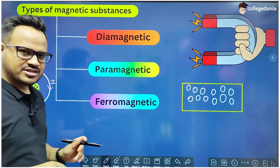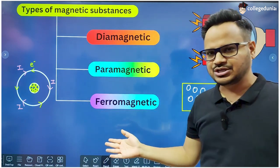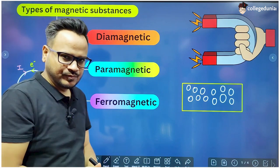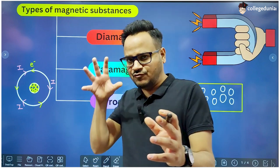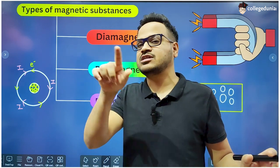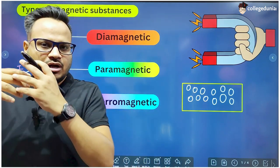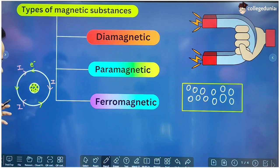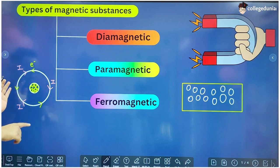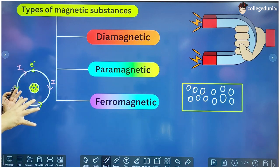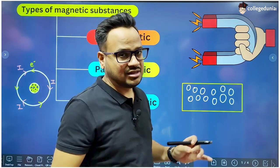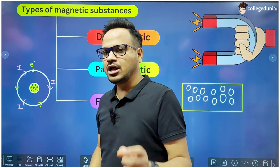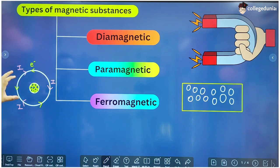This current is in clockwise sense. If we see this current from the opposite direction, from this side the current is clockwise, and from the opposite side it seems anti-clockwise. In a circular loop, if current is clockwise when viewed from one face, that face behaves as a south pole, and the opposite face where current is anti-clockwise behaves as the north pole.